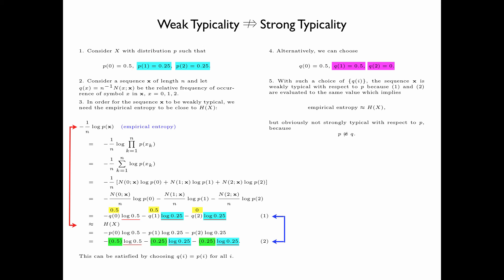Specifically, we have q(1) equals 0.5 but p(1) equals 0.25, and q(2) equals 0 but p(2) equals 0.25. This confirms that the sequence is weakly but not strongly typical.